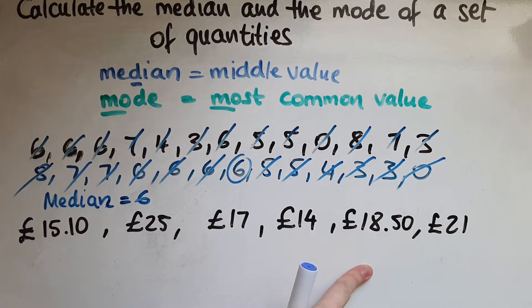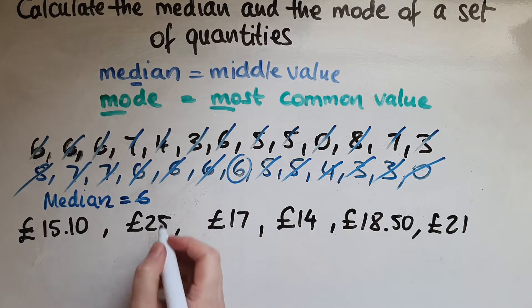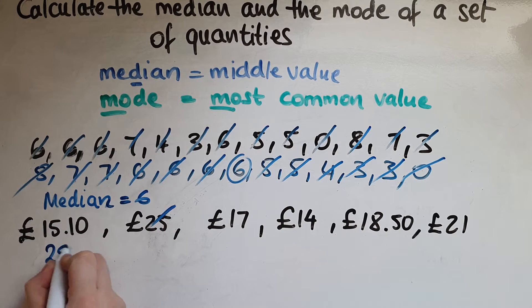Now let's look at these ones. So this is spending for a week for somebody. So we'll find the median of the spending. Again, putting them in order, the highest value out of all of these is the 25.